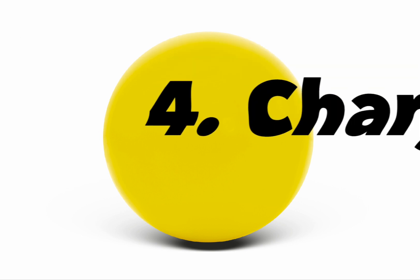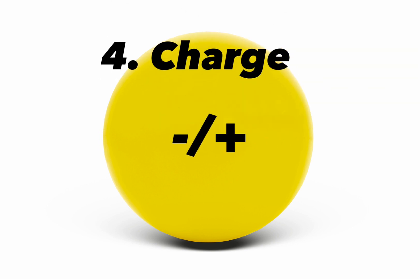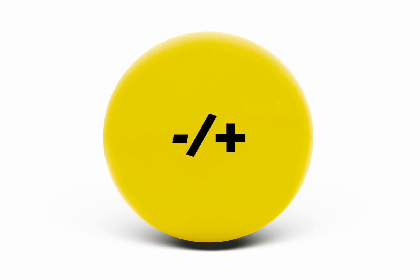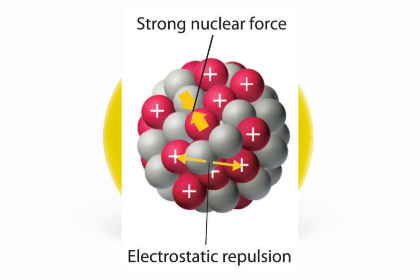4. Charge. Neutrons are electrically neutral, meaning they carry no electric charge. This neutrality is crucial for the stability of atomic nuclei, as it helps counterbalance the positively charged protons, preventing electrostatic repulsion from tearing the nucleus apart.